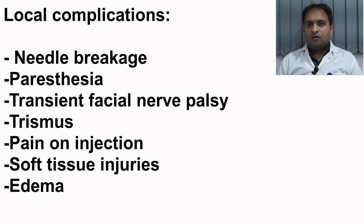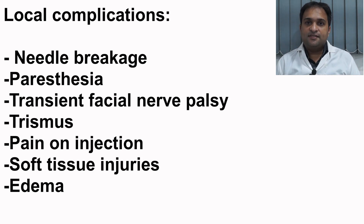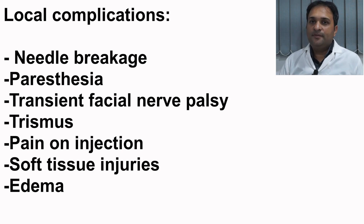In this section, we can now deal with the local complications of inferior alveolar nerve block technique. The local complications include needle breakage, paresthesia, transient facial nerve palsy, trismus, pain on injection, soft tissue injuries, and edema. We shall now discuss each of them in detail.